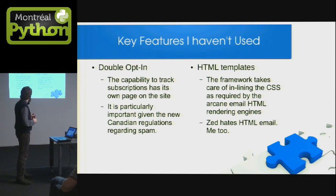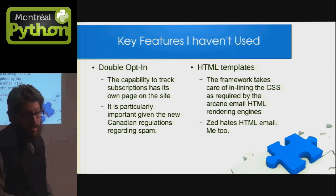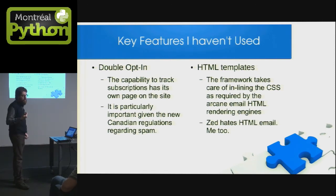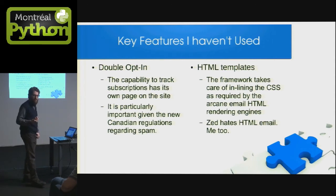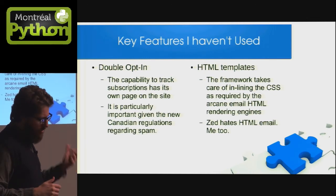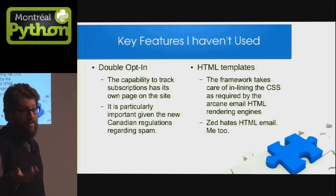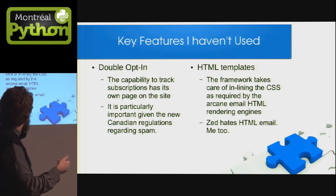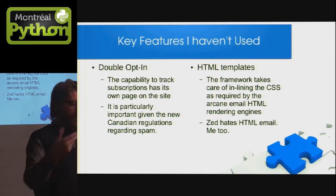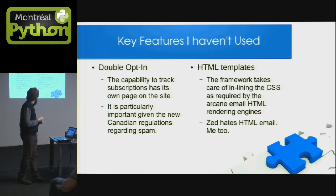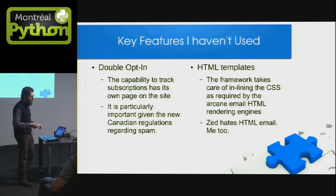Il y a deux choses très importantes que je pense pour la communauté que je n'ai pas utilisées pour Poisson Magique. La première, c'est Double Optin — c'est une capacité qui est très bien implantée dans Lamson. Ça va être très important pour l'année prochaine avec les nouvelles régulations pour les pourriels. Et aussi les templates HTML — il semble que tu ne peux pas avoir de stylages externes dans les courriels, et le système de templates utilisé par Lamson prend un stylage externe et change tous les éléments de HTML avec le stylage. Mais de la même façon que Zed Shaw n'a pas beaucoup d'amour pour les courriels HTML, moi-même je ne pense pas que c'est une bonne idée.